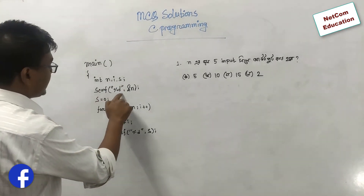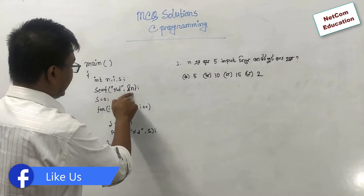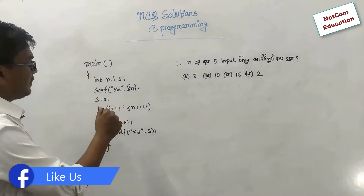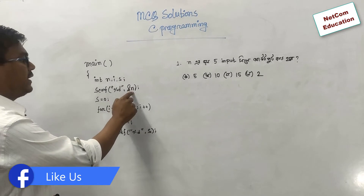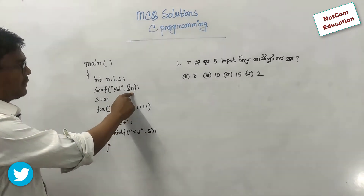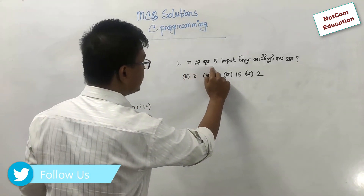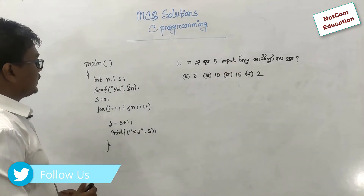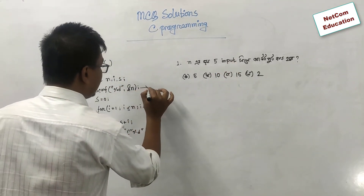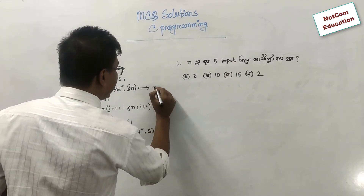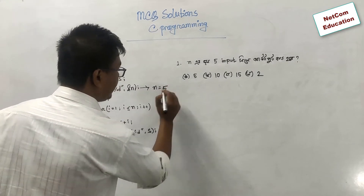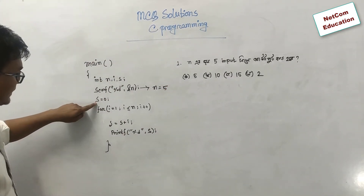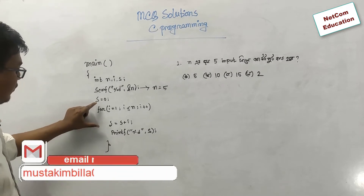In the first time, you can see the input from the keyboard. If you see the input in the box, you can see the output. This is the first one. If you see the input in the case of the keyboard, you can see the output.